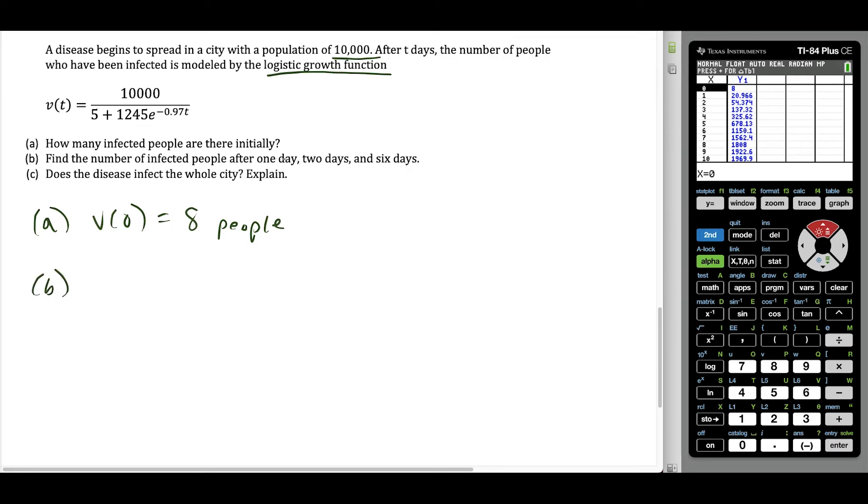And then we want to find the number of infected people after one day, two days, and six days. So now we're just going to find more values. So V(1), we could round to 21. Now there's some debate with these questions, but the idea in this video is using the logistic growth curves, not how do we round in scenarios like this. But some people would say you should round to 20 because the next person isn't fully infected yet. But let's just say we're going to round properly to the nearest whole number. So we have 21 people infected after day one. After day two, we're going to have 54 people infected. And then after six days, that's going to be 1,150 people infected.